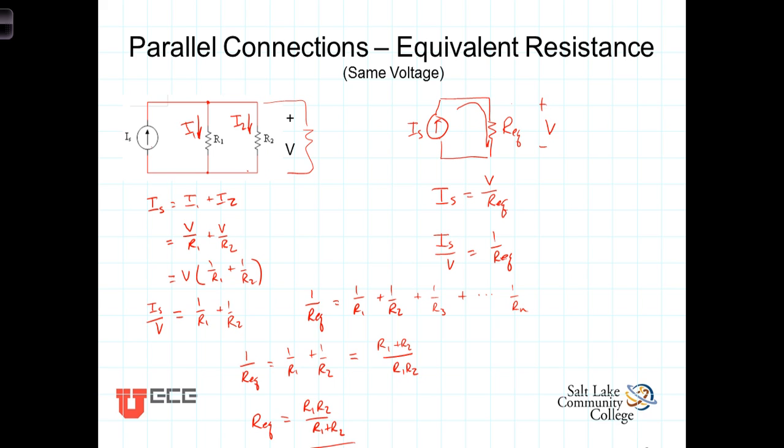Sometimes it's convenient to talk in terms of what is known as conductance. Conductance G is equal to just 1 over the resistance.